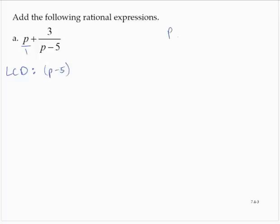So that p over 1, I'm going to multiply by p minus 5 over p minus 5. The second fraction already has a denominator of p minus 5. So that would give me p square minus 5p over p minus 5 plus 3 over p minus 5.